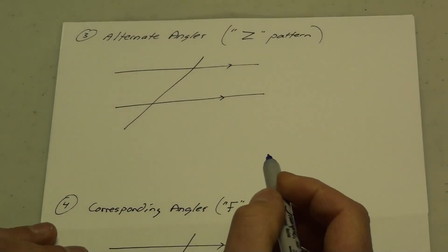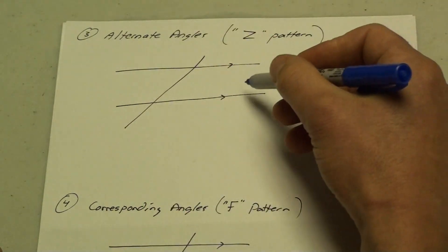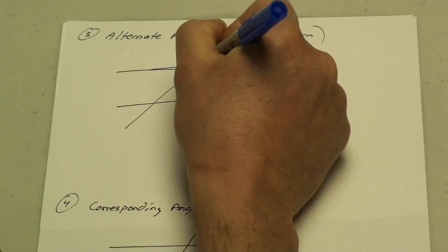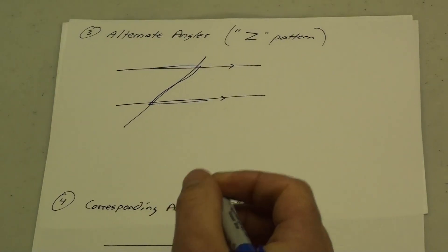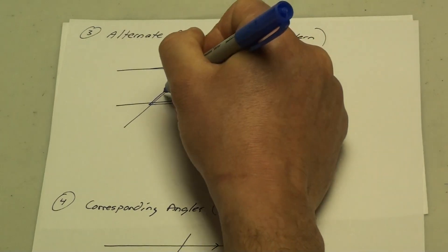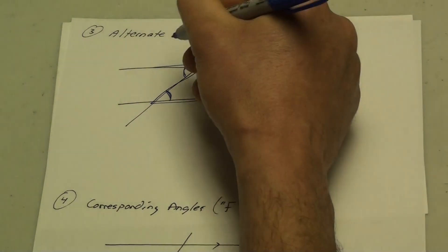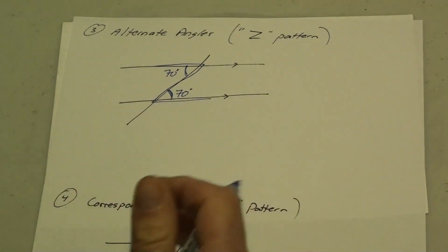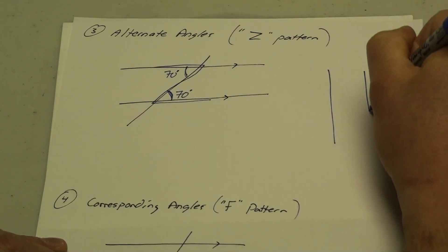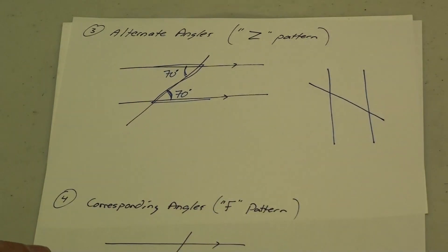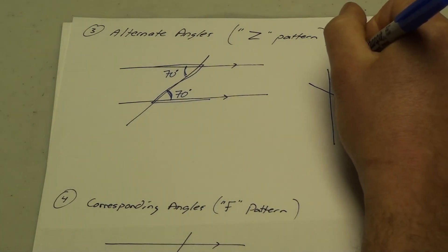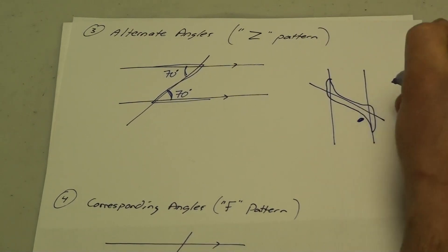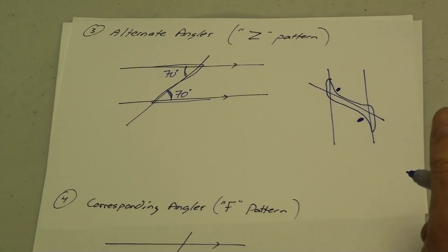The first one is for alternate angles. Alternate angles can be formed by the letter Z. If I have a couple of parallel lines and a line that intersects, I can make the letter Z right there. On this letter Z, this angle and its alternate angle down here are going to be equal to each other. So if this is 70 degrees, the angle down here will also be 70 degrees. The letter Z can go in a variety of different ways — maybe my parallel lines are going up and down with the intersection going that way, forming an expanded Z. In that case, the two alternate angles will still be equal to each other.